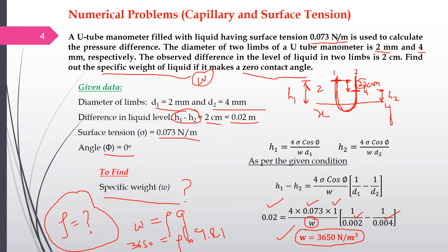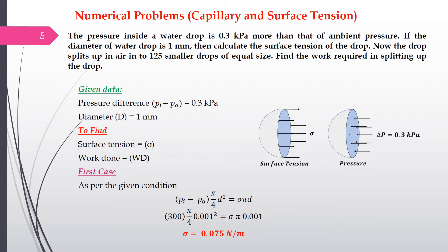We will now discuss the third problem, which is on surface tension. The pressure inside a water drop is 0.03 kPa more than the ambient pressure. If the diameter of the drop is 1 mm, we have to calculate the surface tension of the drop.